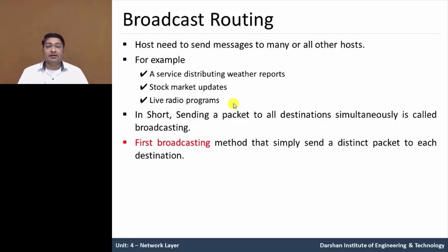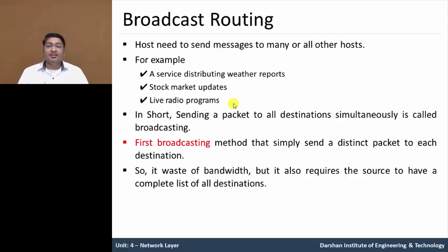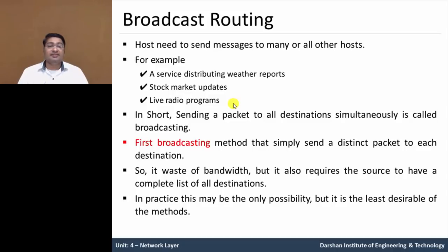The first broadcasting method simply sends a distinct or unique packet to each destination. This wastes bandwidth, and it also requires the source to have a complete list of all destinations. While the destination node has a complete list of other nodes, it wastes bandwidth. In practice, this may be the only possibility, but it is the least desirable method.